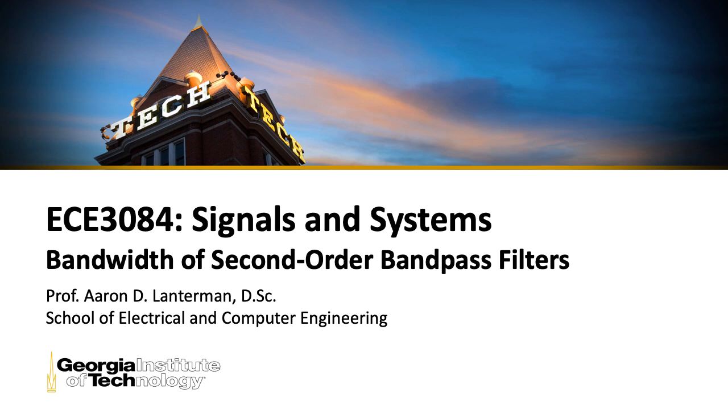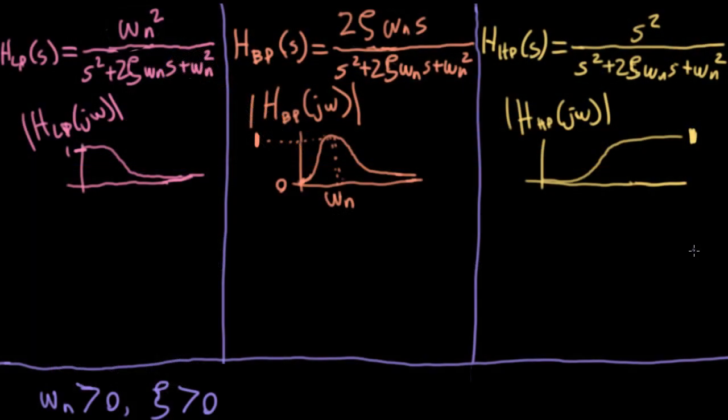Hi there, my name is Aaron Lanchman. I'm a professor of electrical and computer engineering at Georgia Tech, and this is the summer 2020 offering of ECE 3084 signals and systems. For a couple lectures now, we've been looking at these canonical second-order filter functions. We've mostly been characterizing filters in terms of a natural frequency omega n and a damping factor, also called damping ratio, denoted as the Greek letter zeta. But for the purposes of this lecture, I'll prefer to use a parameterization in terms of a quality factor that we explored at the end of the last lecture.